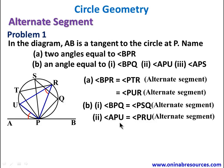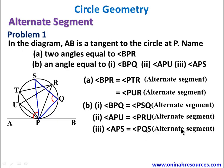For part 3 — angle APS — the chord is PS. From P we have PQ and from S we have SQ, so the alternate angle is at Q. Therefore angle PQS equals angle APS, which is the alternate segment angle. That completes Problem 1.